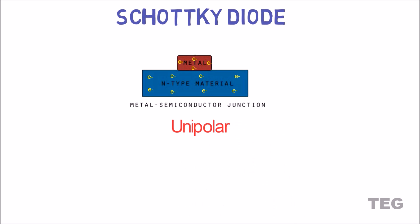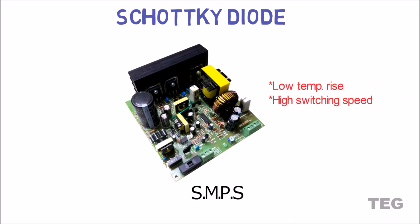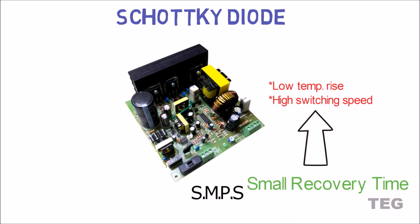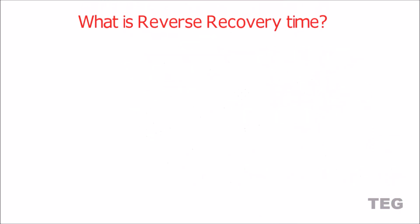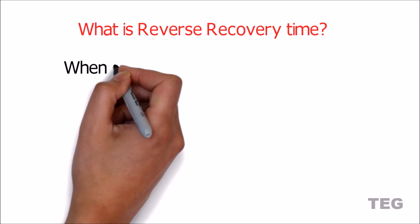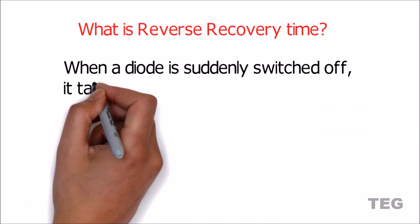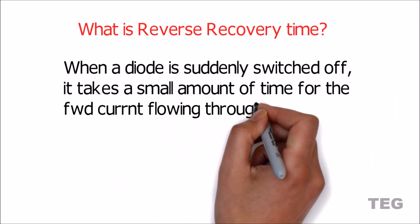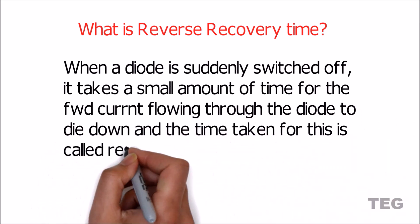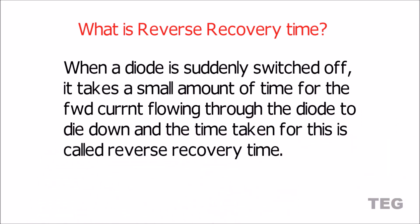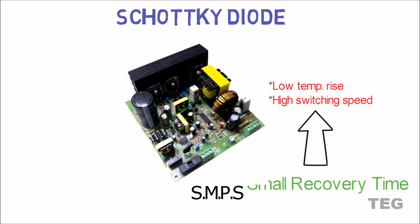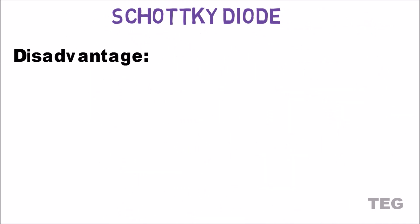The Schottky diode is mostly used in high frequency applications like SMPS, because of less temperature rise and high switching speed due to its small recovery time. When a diode is suddenly switched off, it takes a small amount of time for the forward current flowing through the diode to die down — the time taken for this is called reverse recovery time. Compared to a normal diode, the reverse recovery time of a Schottky diode is much smaller, making it suitable for use in fast switching circuits.